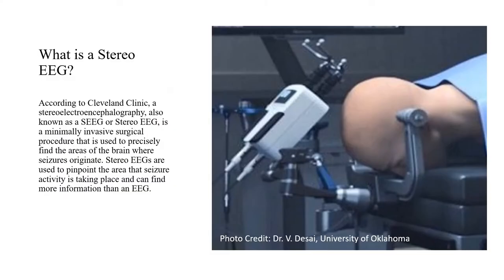According to Cleveland Clinic, a Stereo Electroencephalography, also known as an SEEG or Stereo EEG, is a minimally invasive surgical procedure that is used to precisely find the areas of the brain where seizures originate. Stereo EEGs are used to pinpoint the area that seizure activity is taking place and can find more information than a standard EEG.